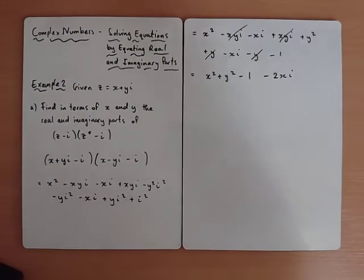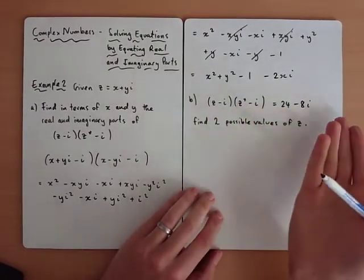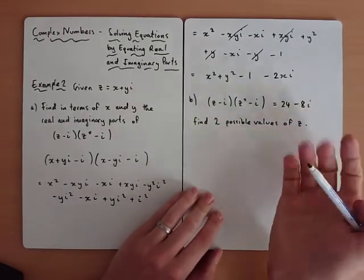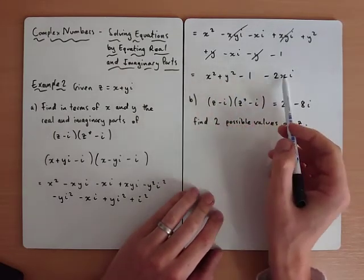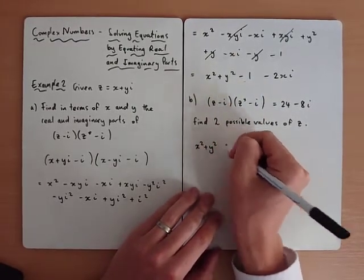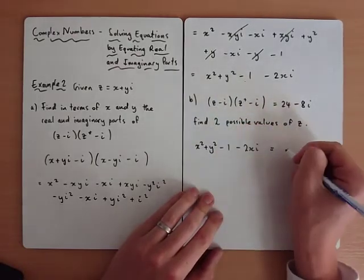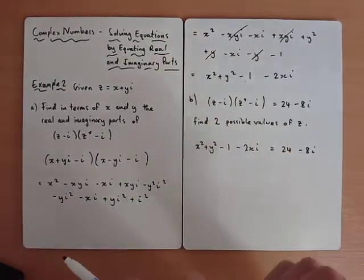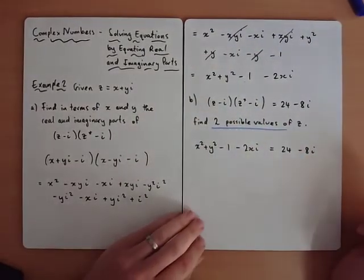Part b gives an equation with lots going on — Z's, conjugates, brackets — and asks for the two possible values of Z. Don't panic. We know the left-hand side can be written in real and imaginary form as (x squared plus y squared minus 1) minus 2xi. We compare this to the right-hand side: 24 minus 8i. The question says two possible values, so we should expect to find two.